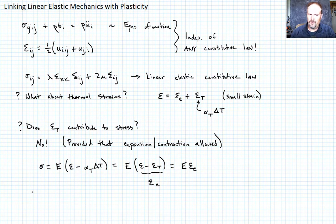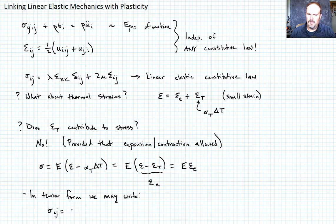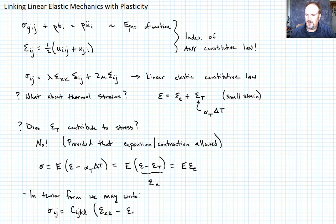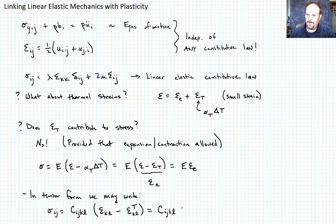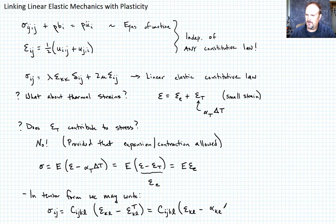In tensor form, we write sigma_ij equals C_ijkl times (epsilon_kl total minus epsilon_kl thermal), which we can also write as C_ijkl times (epsilon_kl minus alpha_kl delta T). So the thermal expansion coefficient is now a tensor alpha_kl.